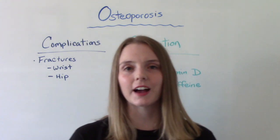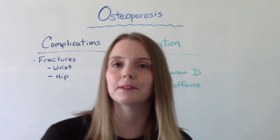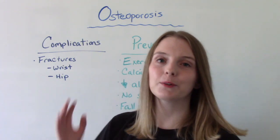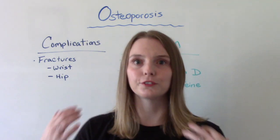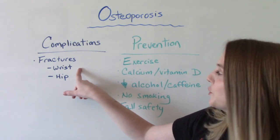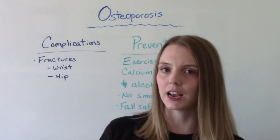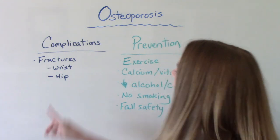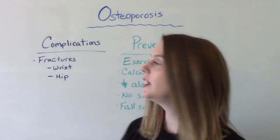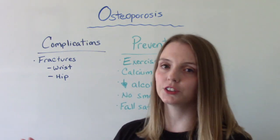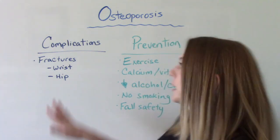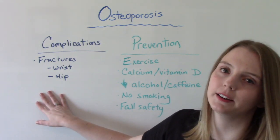The big complication of osteoporosis is fractures — we've been talking about that this whole time. Wrist fractures are the most common type of fracture people get, and hip fractures are the most dangerous. Hip fractures and spinal fractures could potentially be deadly, so it's very important that we prevent these complications from happening.